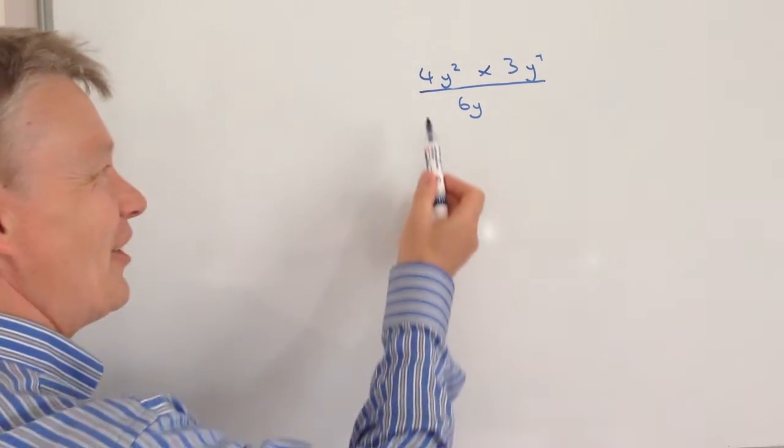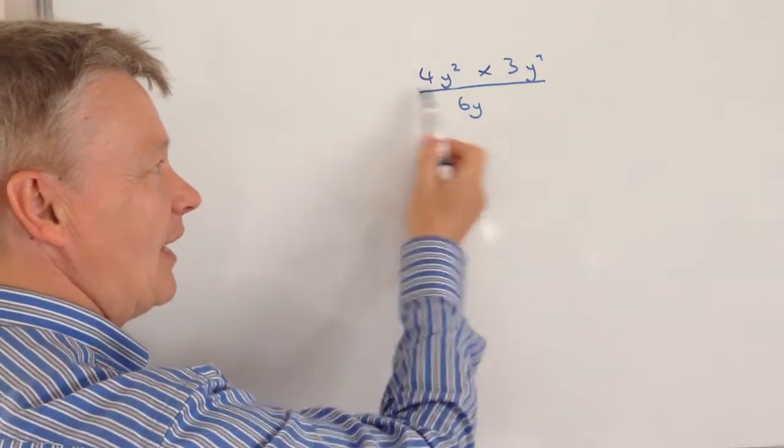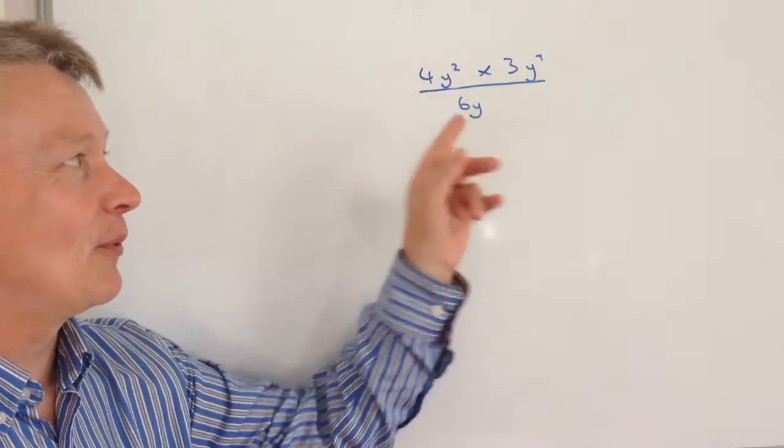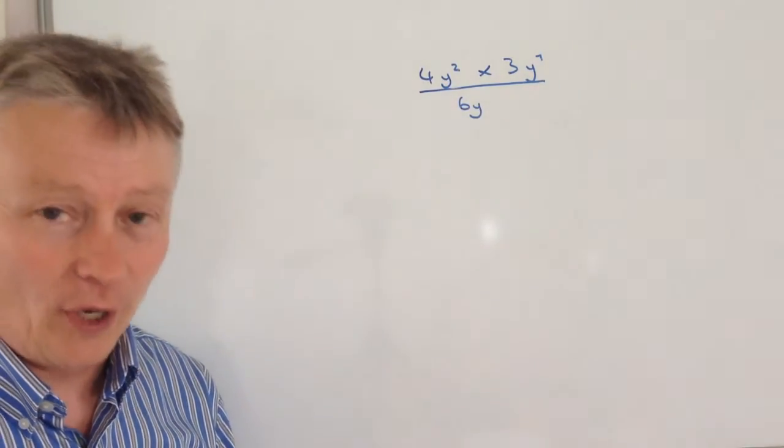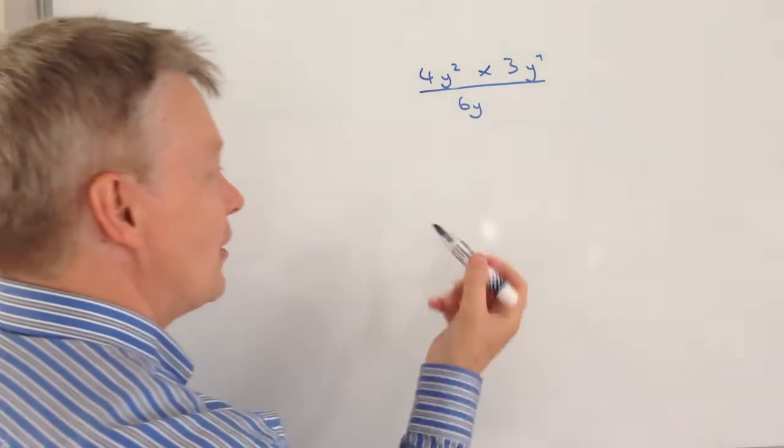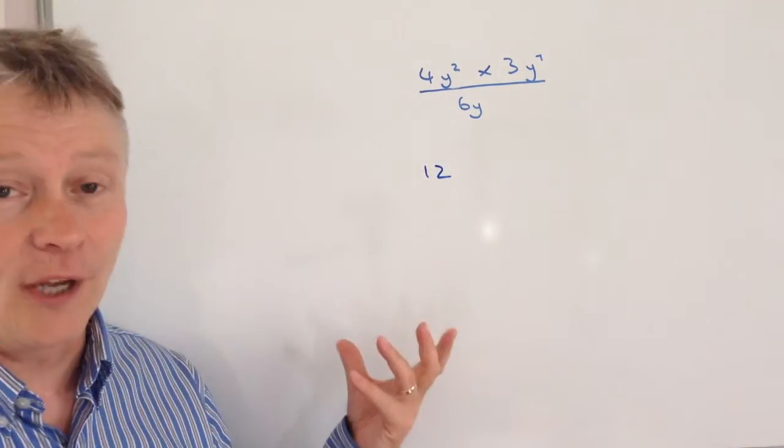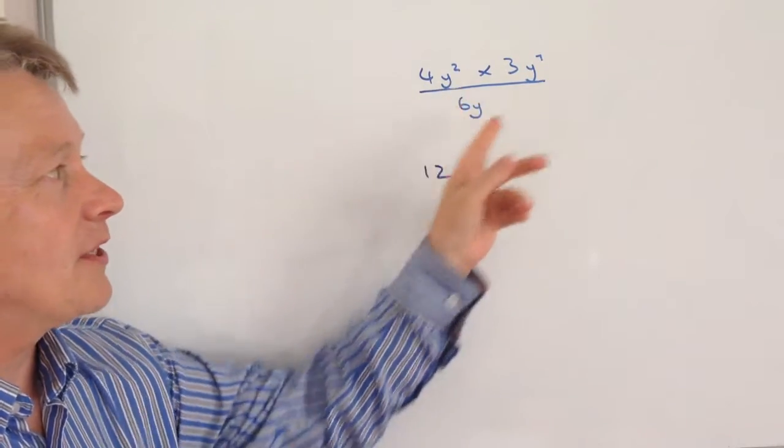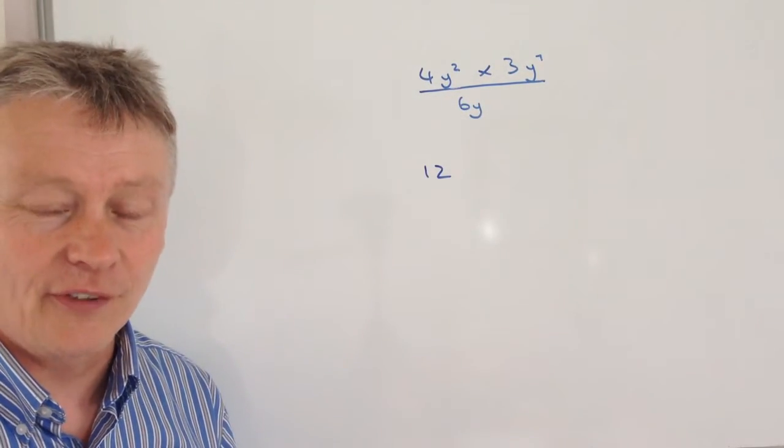Okay, so what we do is we multiply out the top terms. We've got 4y squared times 3y to the 7. So 4 times 3 is fairly easy enough, that's 12. Okay, and then you've got y to the 2 times y to the 7.